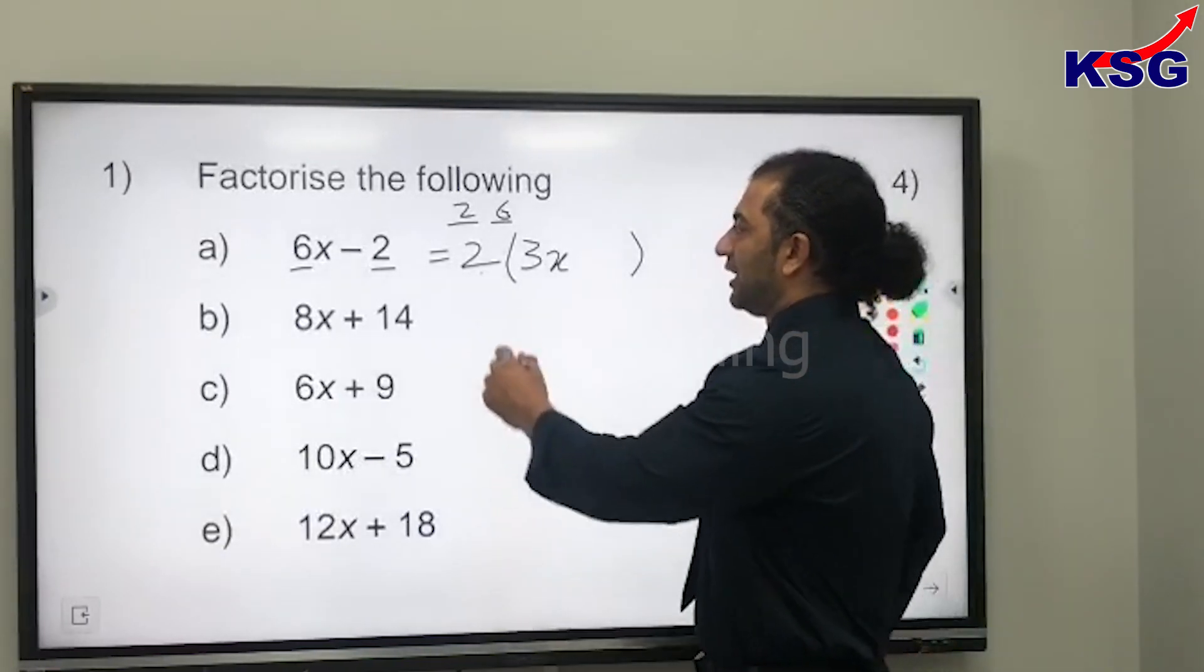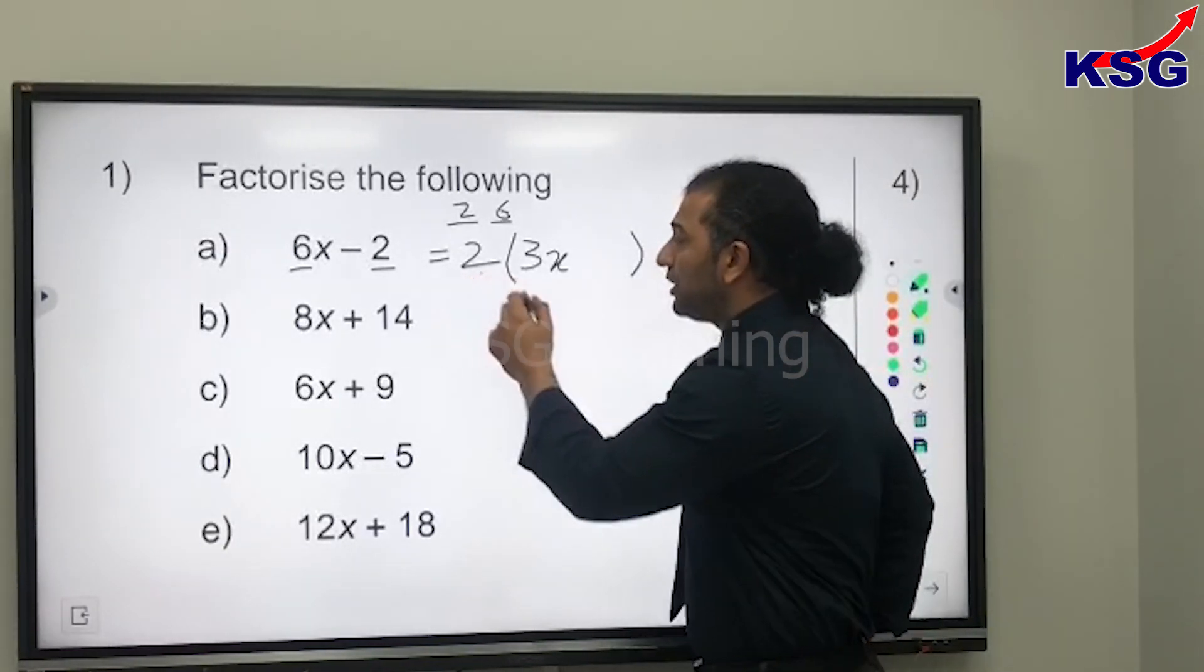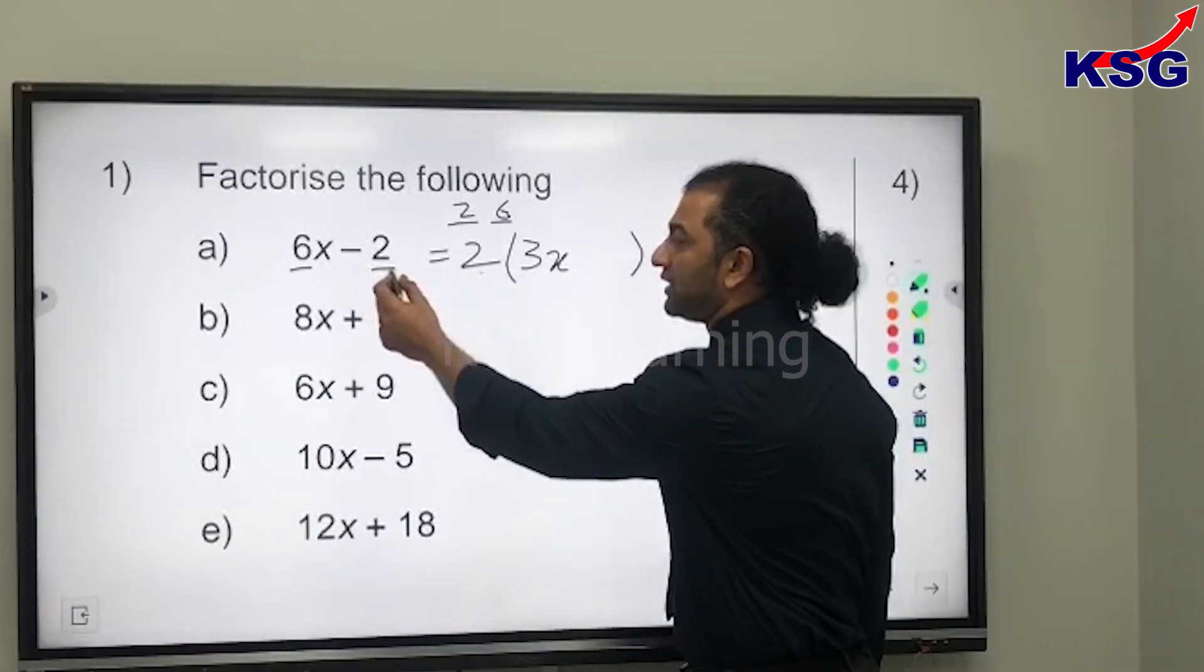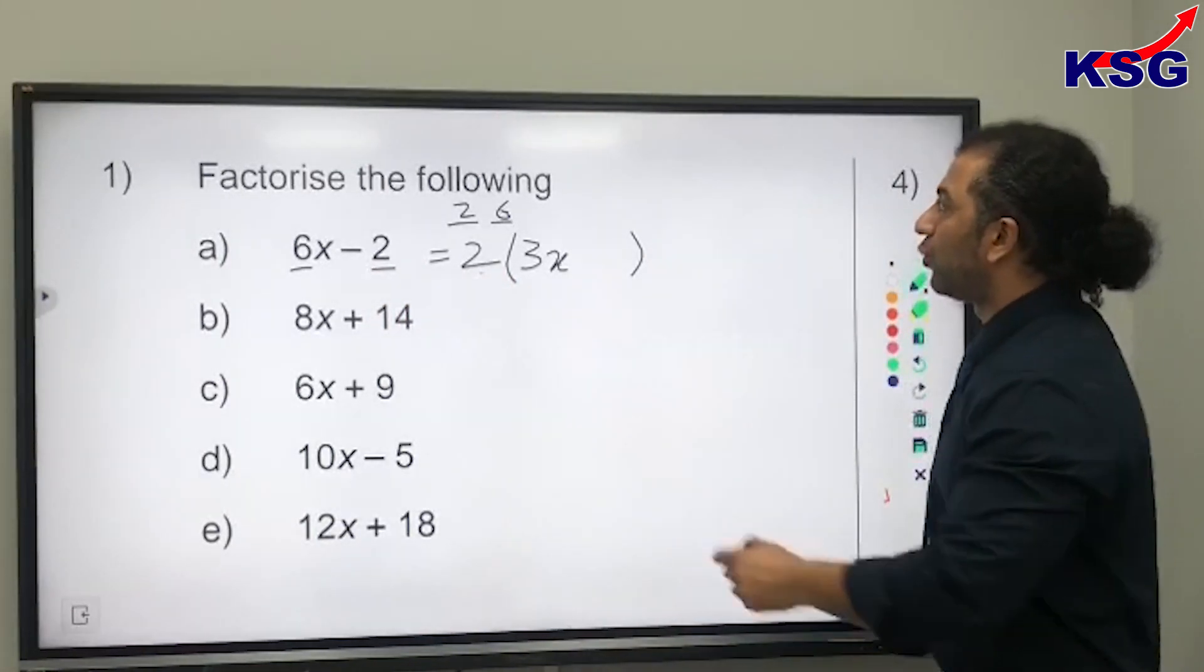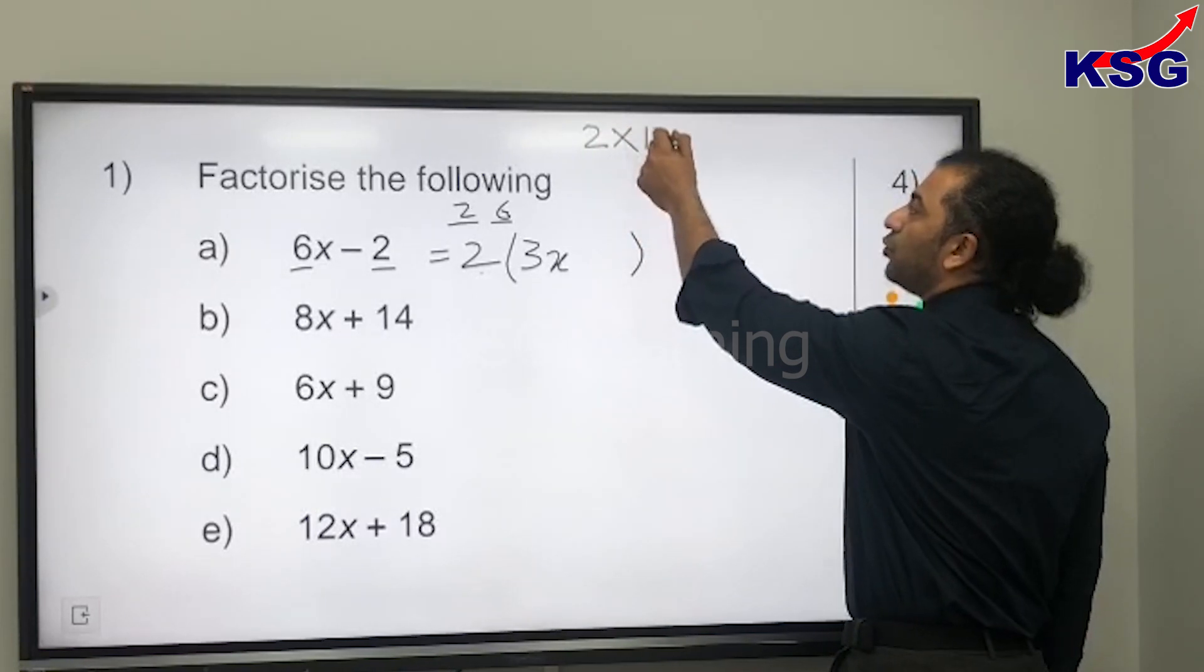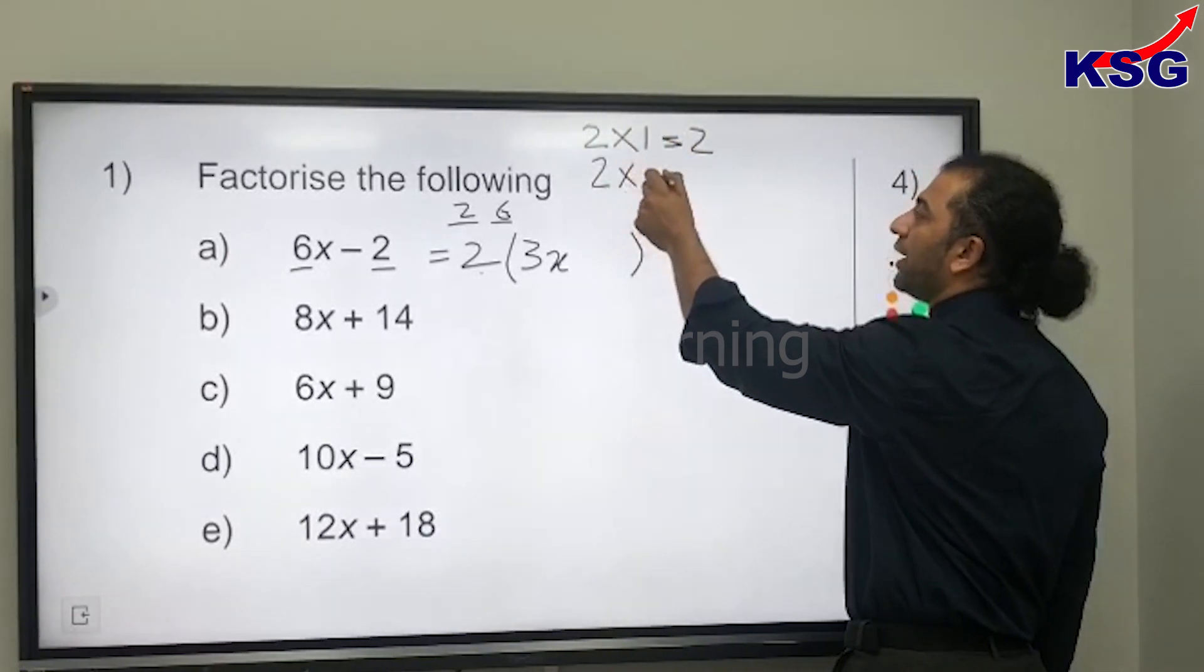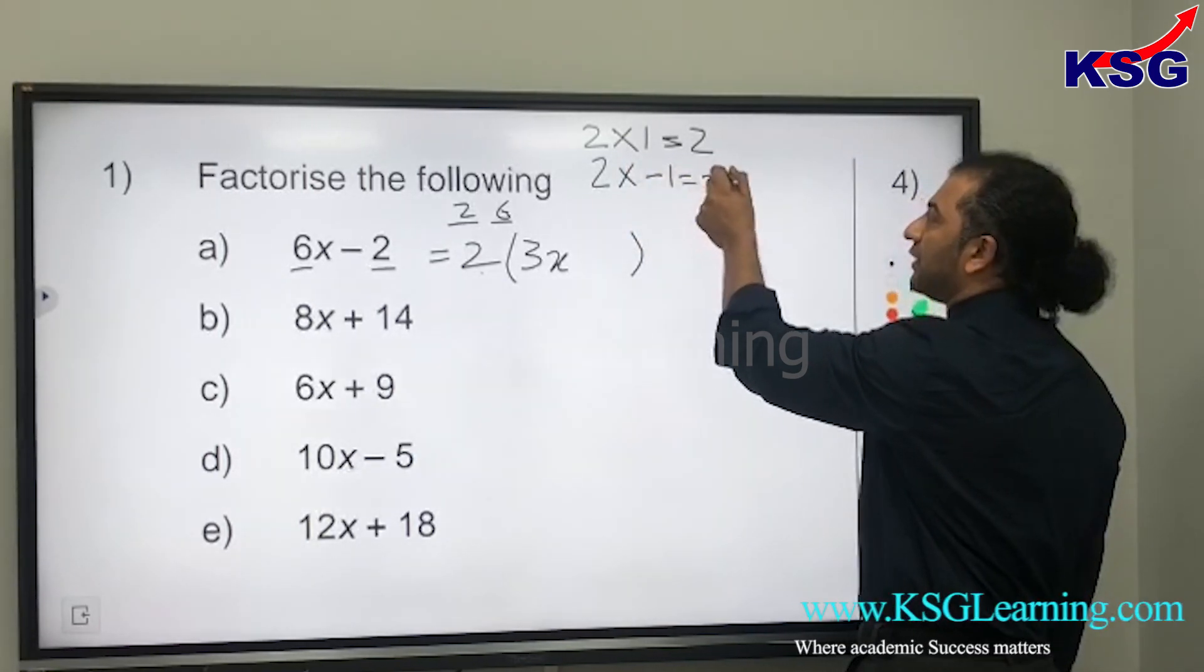Third step: what do we multiply with this 2 so we get negative 2? We multiply 2 times 1, that gives us 2, but if we times it by minus 1, that gives us minus 2.